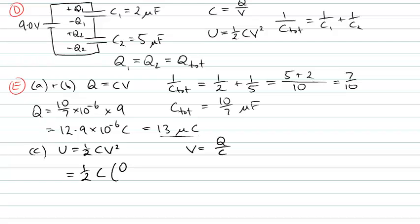Instead of V squared, I can write Q over C squared. You can see the C out the front will cancel with one of the one over C squareds. This will equal a half times Q squared over C.